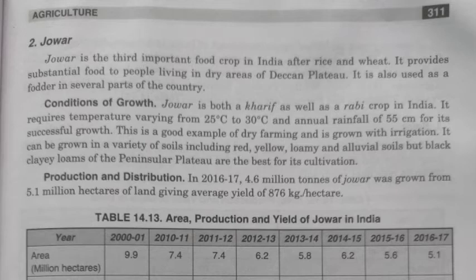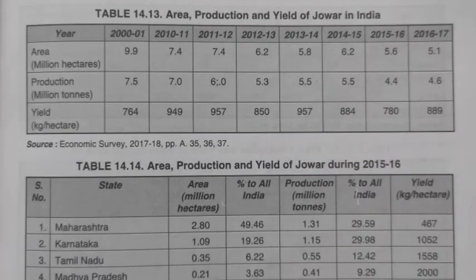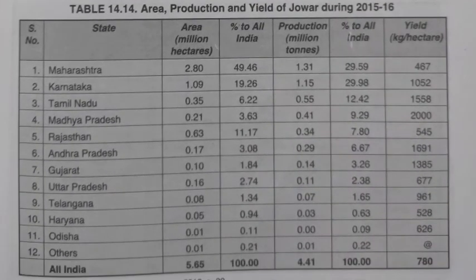Jowar is a very good example of dry farming as it requires very little rainfall. Various soil types can be used including red, yellow, loamy, and alluvial, but the black clay loam soil of Peninsular India is best for its cultivation. India ranks first in jowar production in the world. State-wise area, production, and yield data for jowar is available in the tables provided.